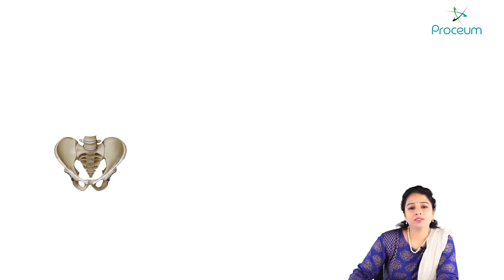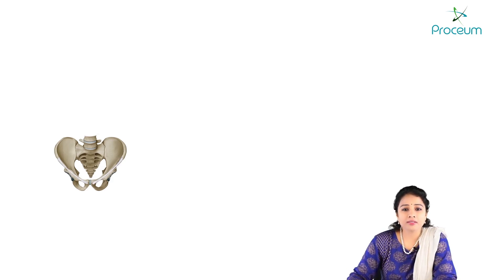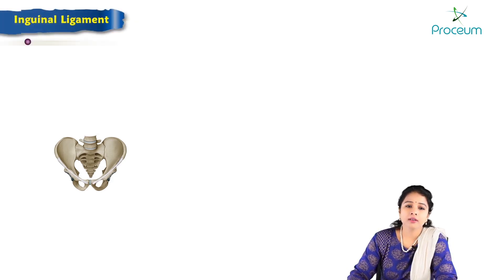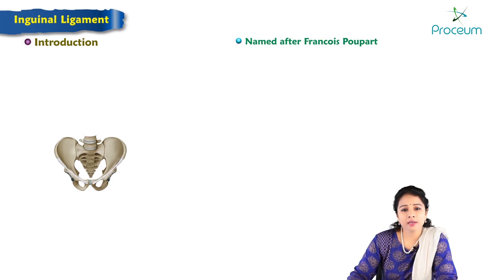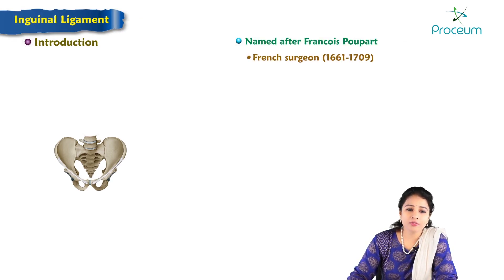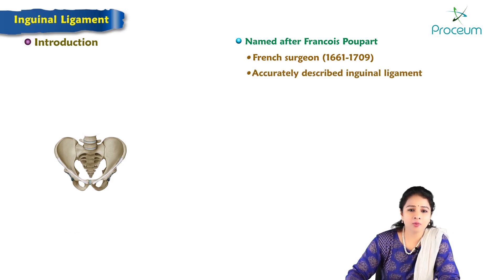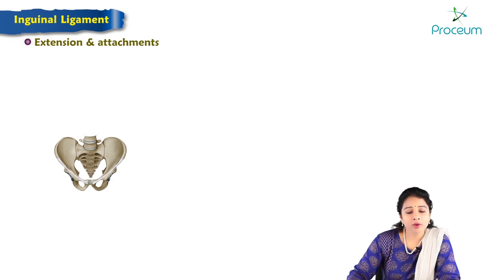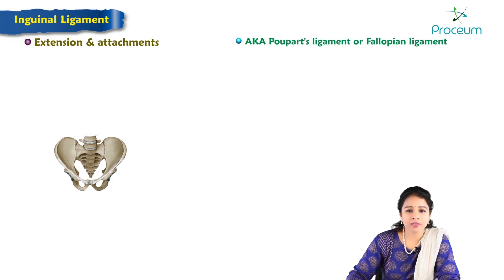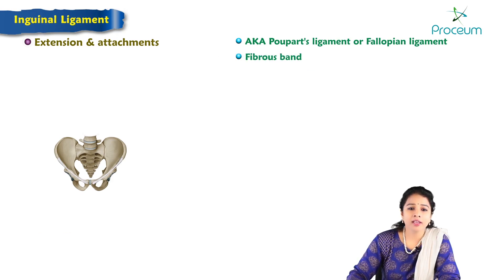Dear students, today's topic is the inguinal ligament. It is named after Francois Poupart, a French surgeon who accurately described it. The inguinal ligament is otherwise called Poupart's ligament or fallopian ligament, and is a fibrous band extending from the anterior superior iliac spine to the pubic tubercle.